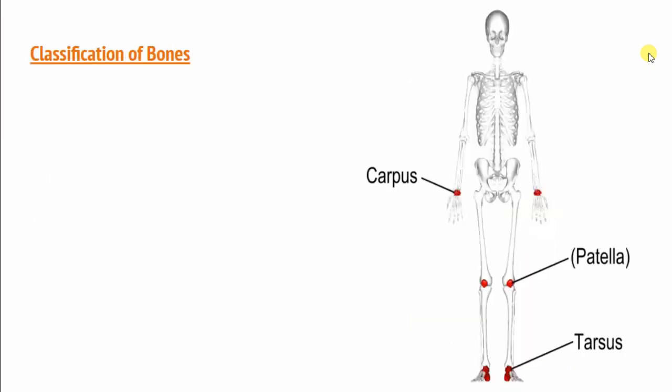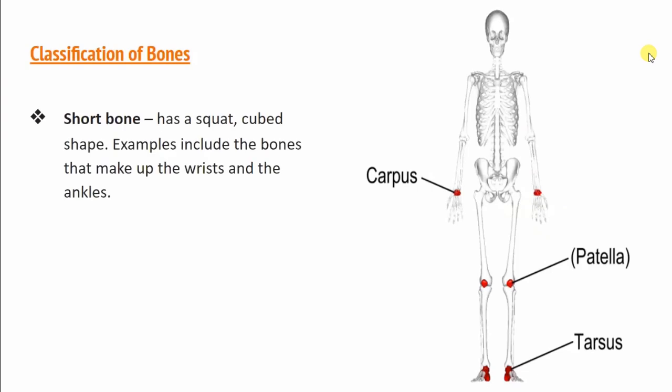The second type of bone is short bones. These are cube-like bones. Here we have the red colors denoting the bones. The carpals, patella, and tarsus are all short bones.